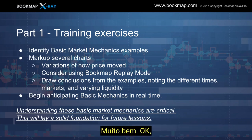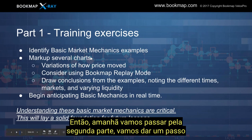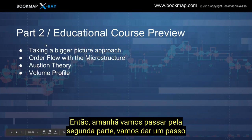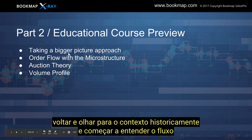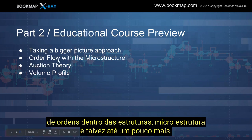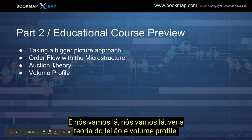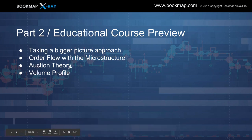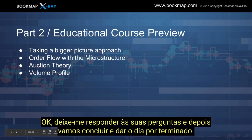Tomorrow we're going to go through part two — we're going to take a step back and look into the bigger picture historically, and start to understand order flow within structures: microstructure and maybe even a bit bigger. We're going to go over auction theory and volume profile. Let me get to your questions and then we'll wrap it up and call it a day.